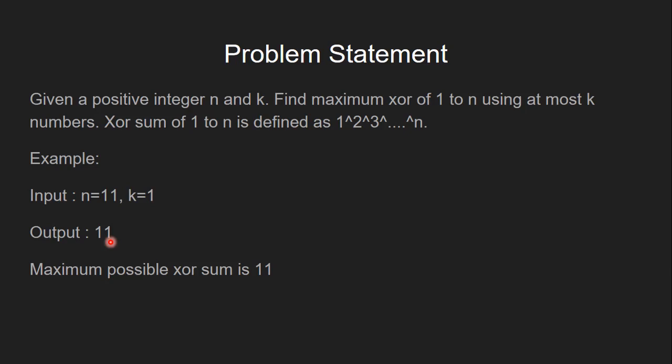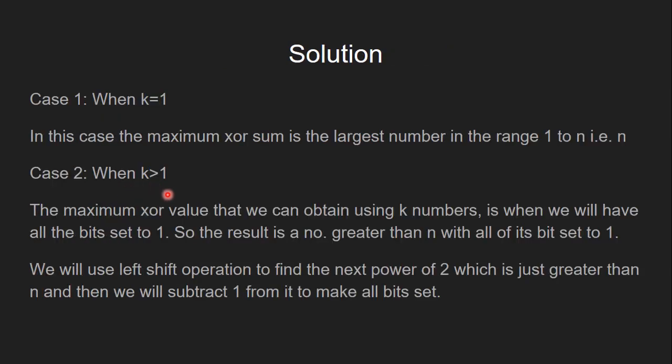Let's see how to solve this problem. The problem is divided into two cases. Case 1: When k equals 1. In this case, the maximum XOR sum is the largest number in the range 1 to n, that is n itself.